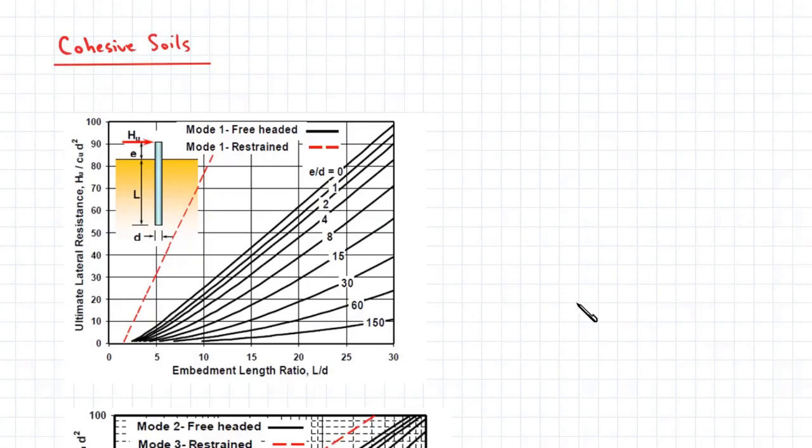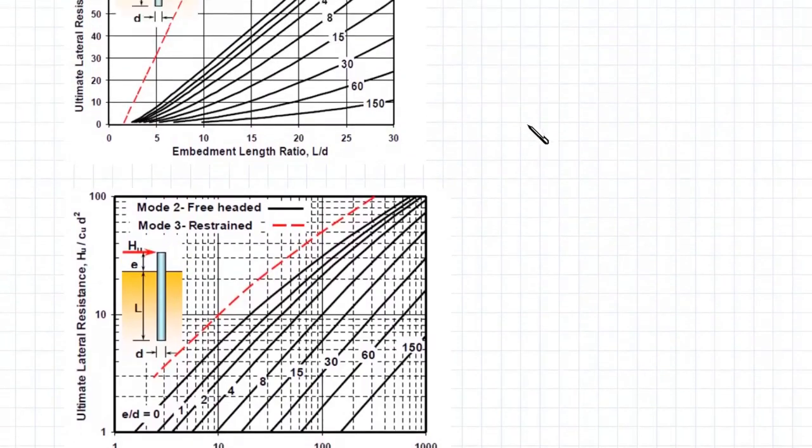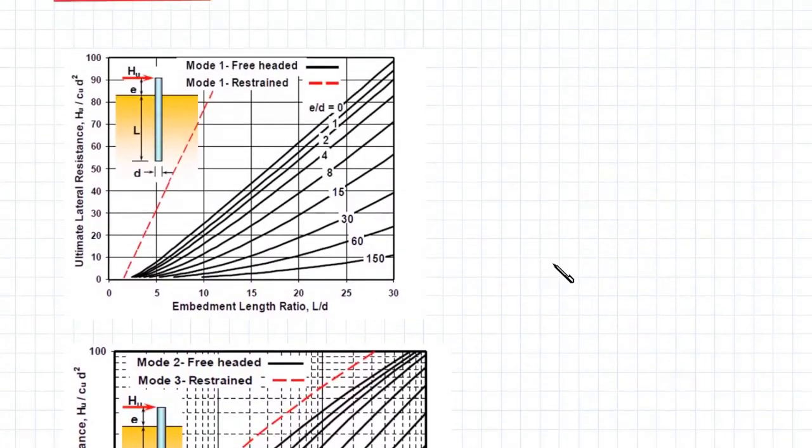For Mode 1, you need to first determine the embedment ratio L/D and another ratio E/D, where E is the height of the lateral load above the ground surface. You then project horizontally across to find the ultimate lateral resistance Hu divided by Cu multiplied by D². Since we know Cu and D², we can multiply these values to get Hu, which is the lateral capacity for Mode 1.